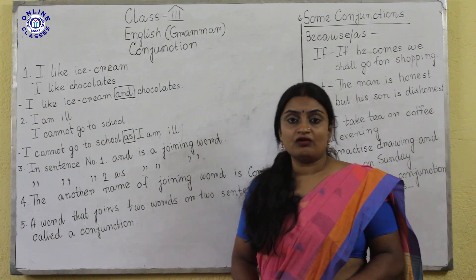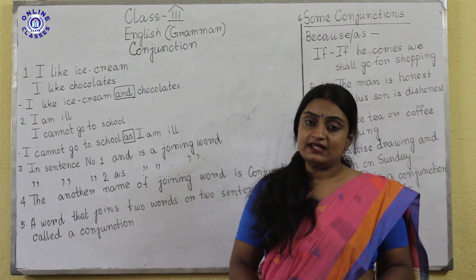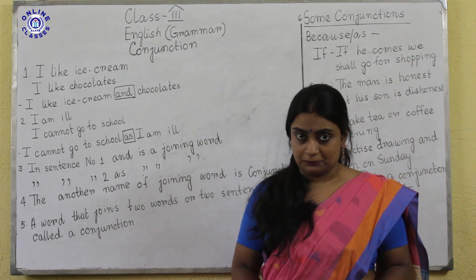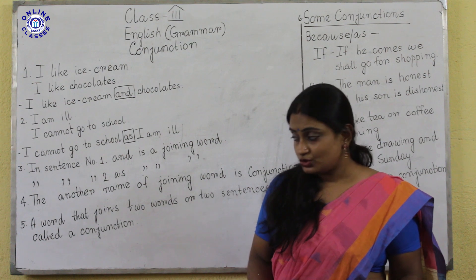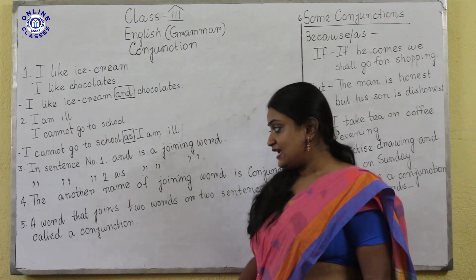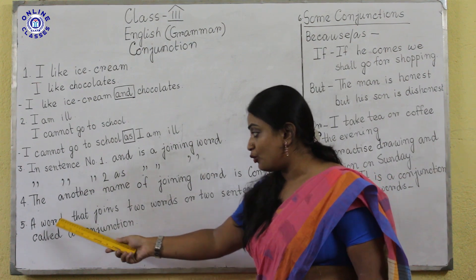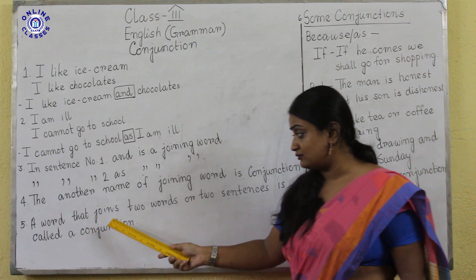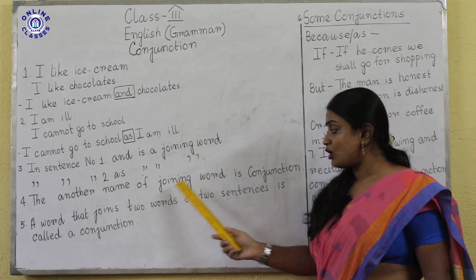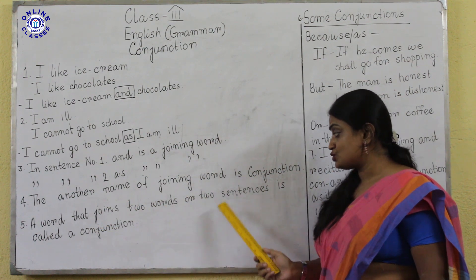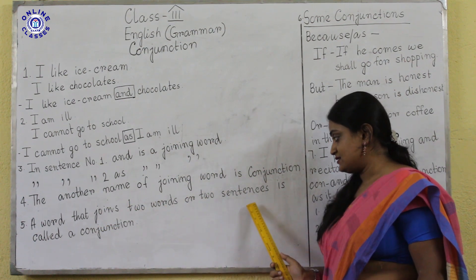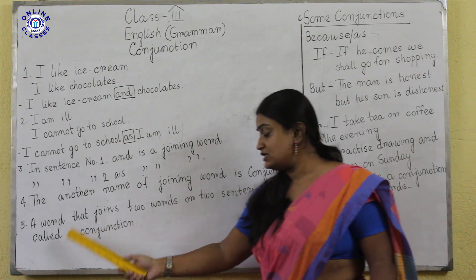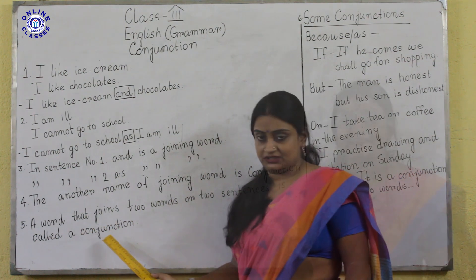The other name of a joining word is conjunction. So to define, we can say that a word that joins two words or two sentences is called a conjunction.